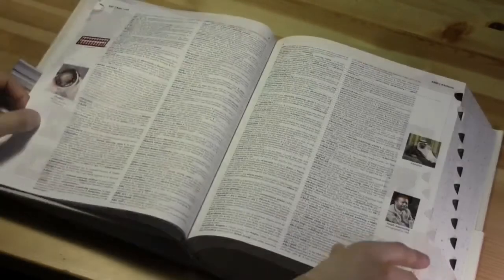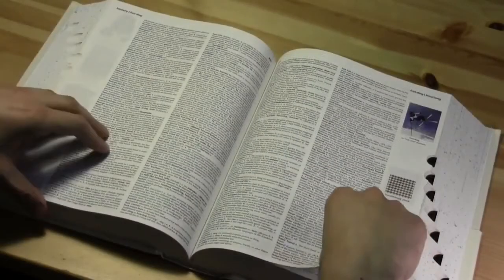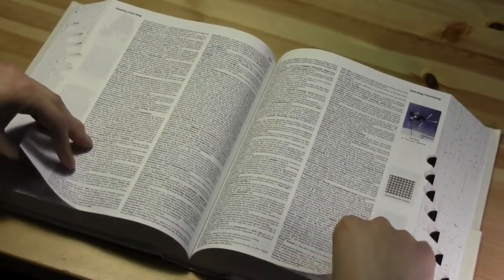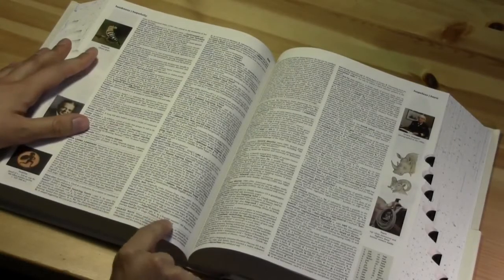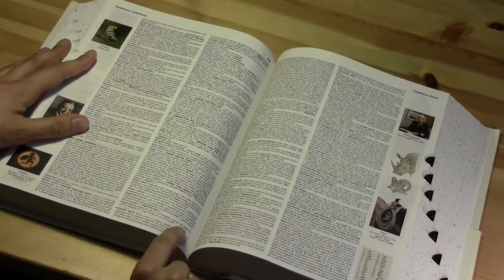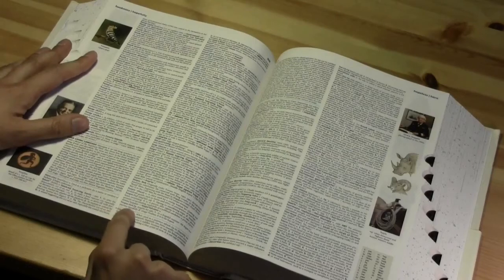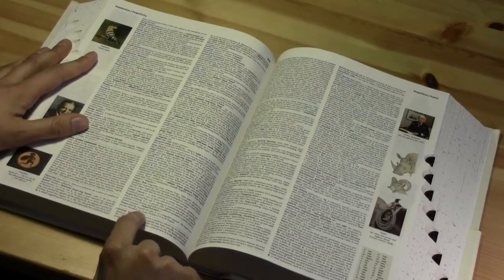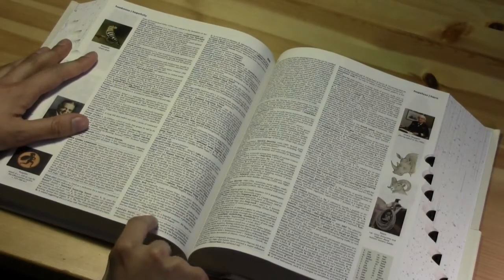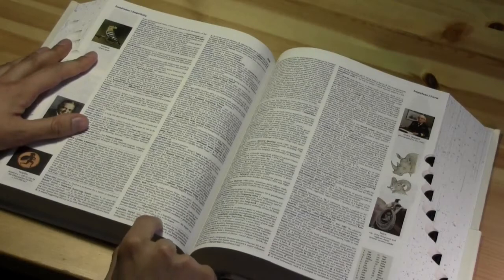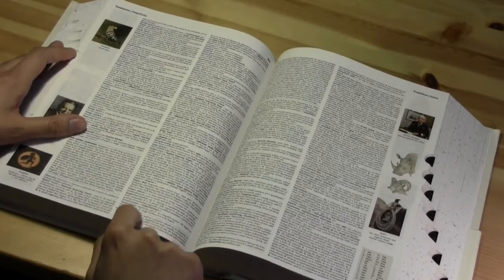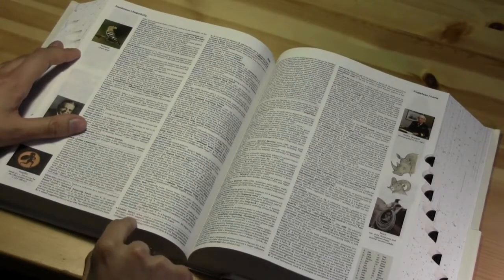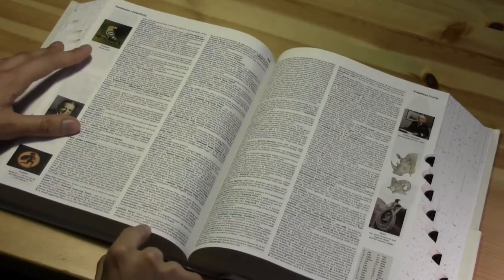Let's look up a few words. So here's one that often causes some problems: hopefully. So sense one, in a hopeful manner, and then they give a sample sentence: 'We began our journey hopefully.' And then sense two, which they tag as a usage problem: hopefully in the sense of 'it is to be hoped.' The usage panel thinks it's incorrect.